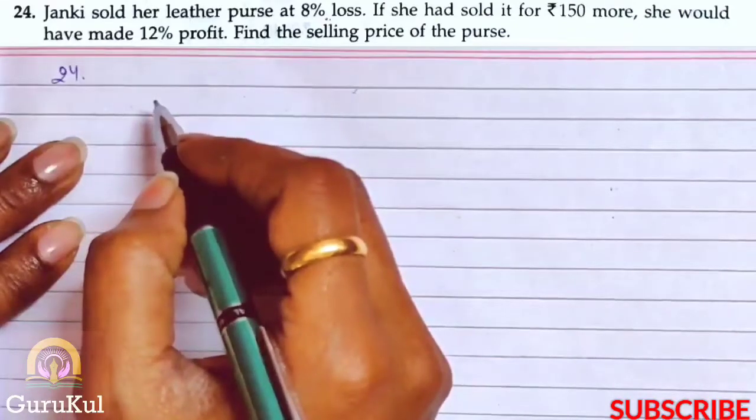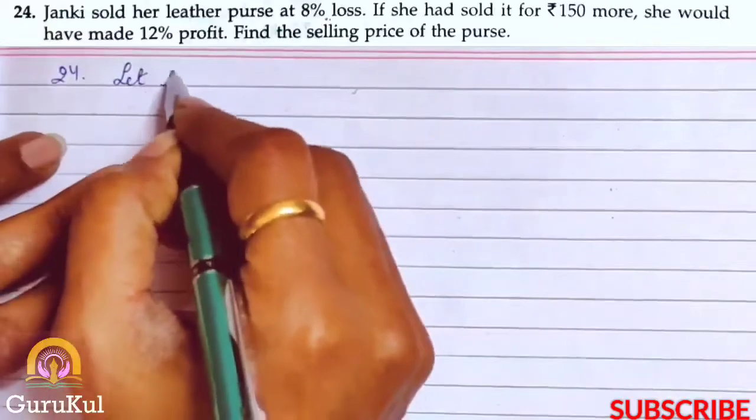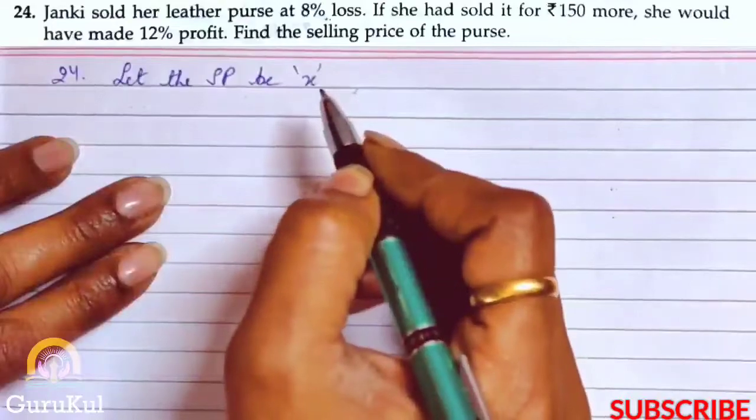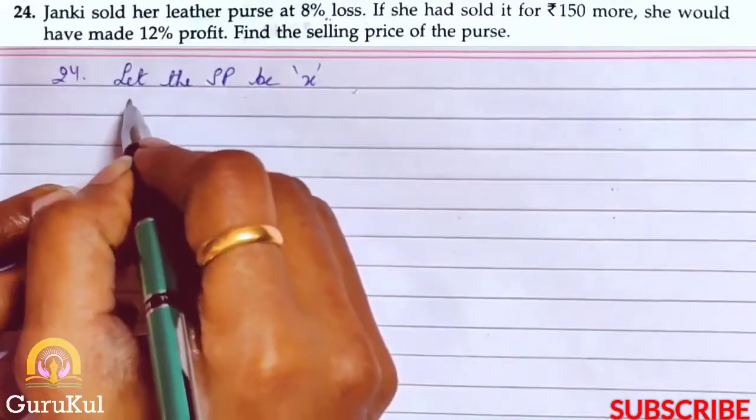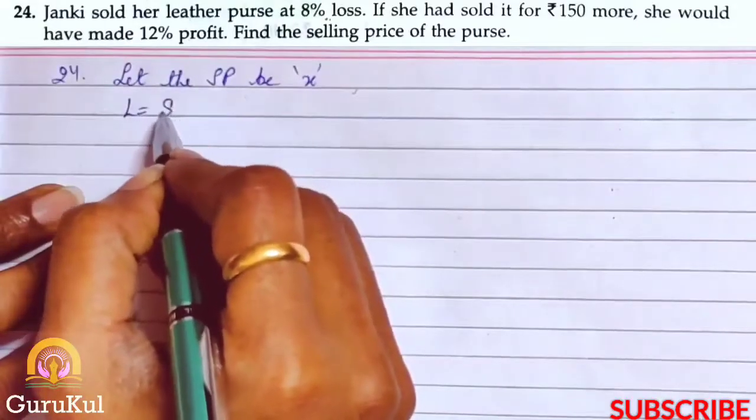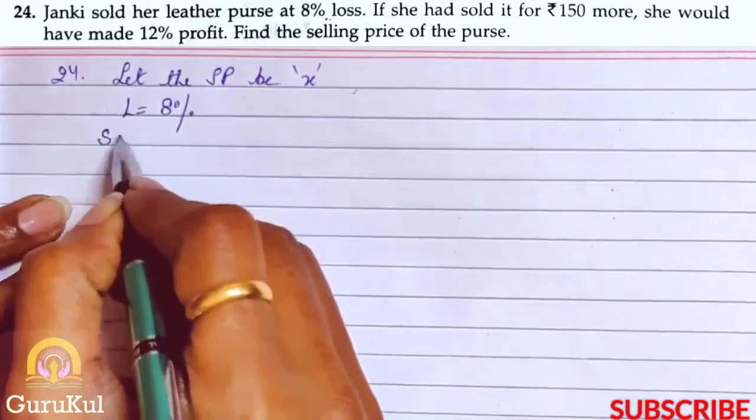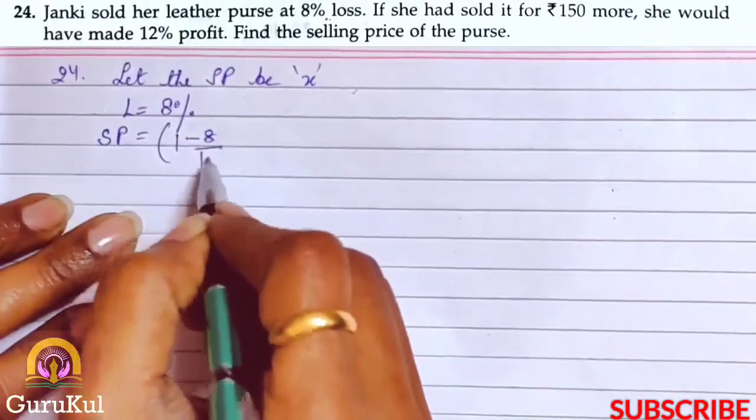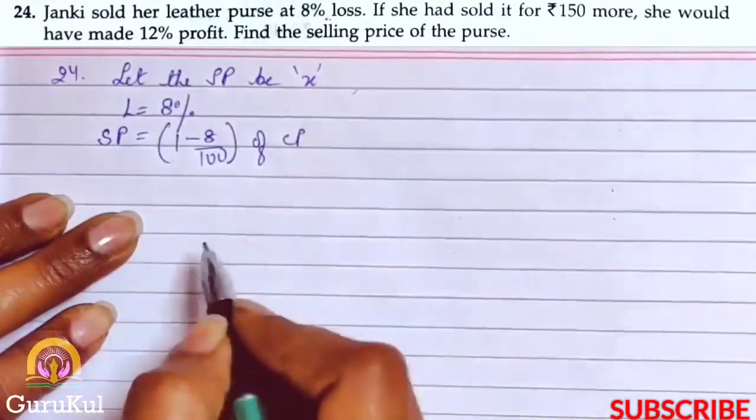Since we need to find selling price, let the selling price be x. In the first case, Janaki made a loss of 8%. The formula is SP equals 1 minus 8 by 100 bracket closed of CP.